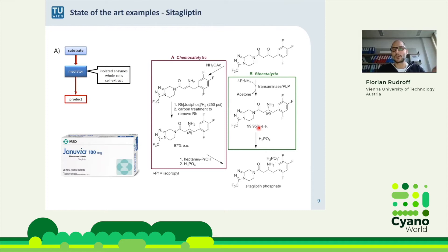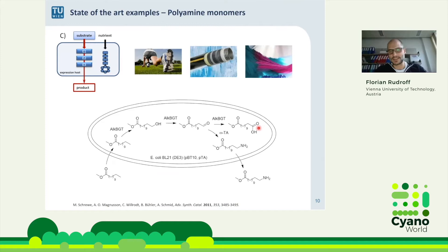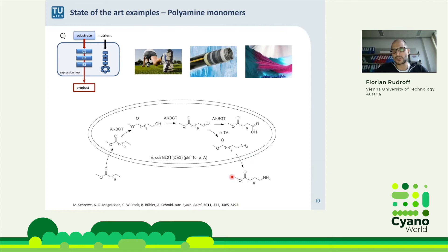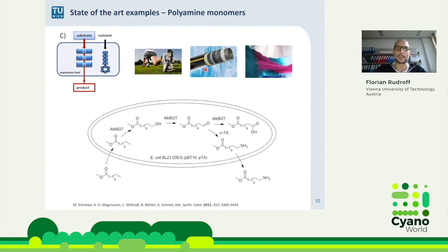They developed this transaminase enzyme, achieving 99.5% optical purity — even higher than the chemical process — with no metal contamination. The process substituted the purely chemical step with a biocatalytic one in a single step on industrial scale. The second example, which I love to show from Andreas Schmidt's group, uses fatty ester compounds with hydroxylation and oxidation reactions — using ALK-BGT monooxygenase for two-step oxidation plus a transamination to produce long fatty chain amino acids as precursors for high-performance polymers.